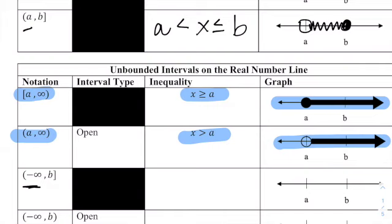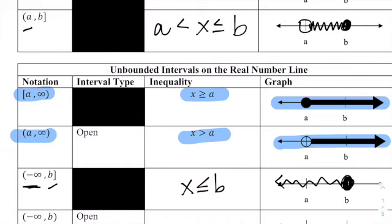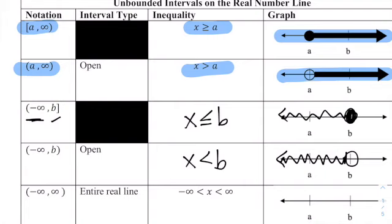Now let's look at a negative, or less than, direction. If X is less than or equal to B, we're going in the negative direction. B has a bracket, so it's less than or equal to — that's a closed circle for B, including all values to the left towards negative infinity. If X is less than B, that's an open circle for B and all the values to the left of B.